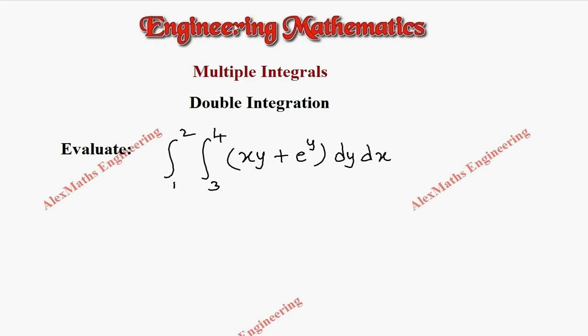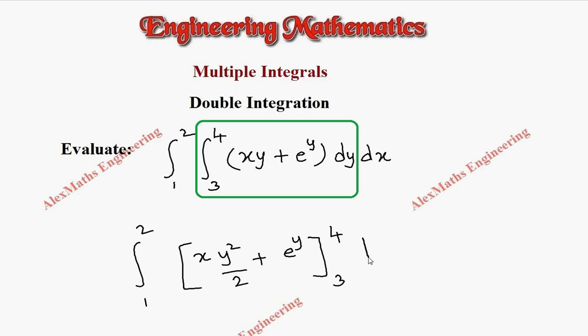Let's integrate with respect to y first. So only this part. So x is treated as a constant. So outside we have integral 1 to 2, integration of xy, x is constant and y integration is y square by 2 plus e power y integration is e power y and we have to substitute the limit which is from 3 to 4 and outside we have dx.